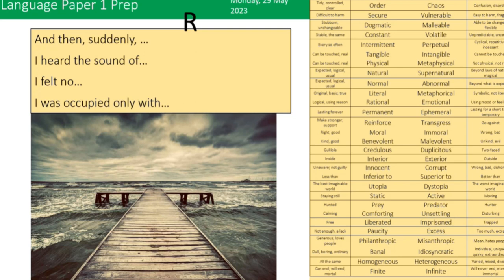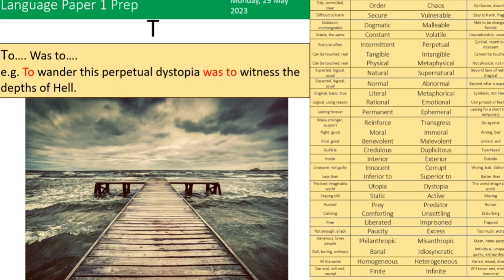The final T stands for two was two: one sentence, punchy paragraph. You just fill in the gaps. For example, 'To watch this video was to understand success,' or 'To wander this dystopia was to witness the depths of hell.' You just fill in the gaps after 'to' and after 'was to.'